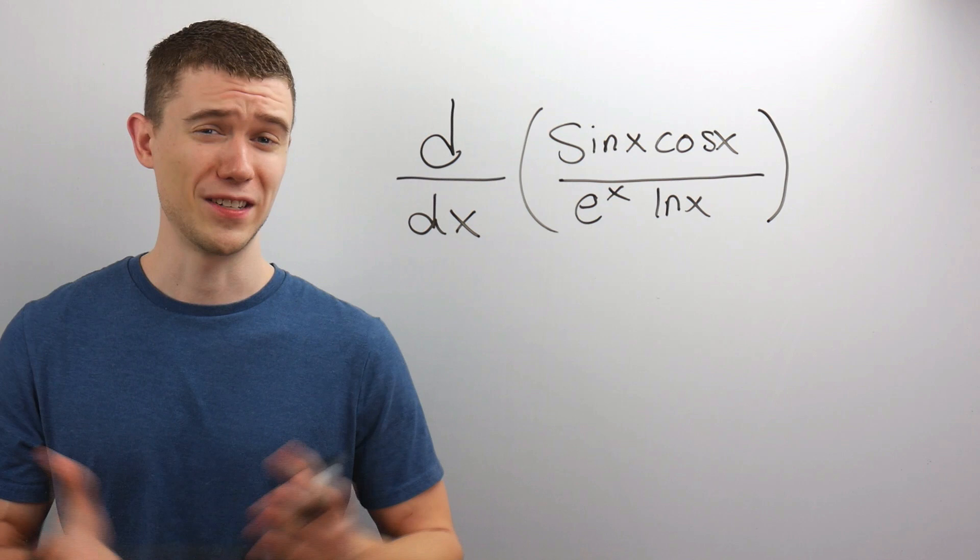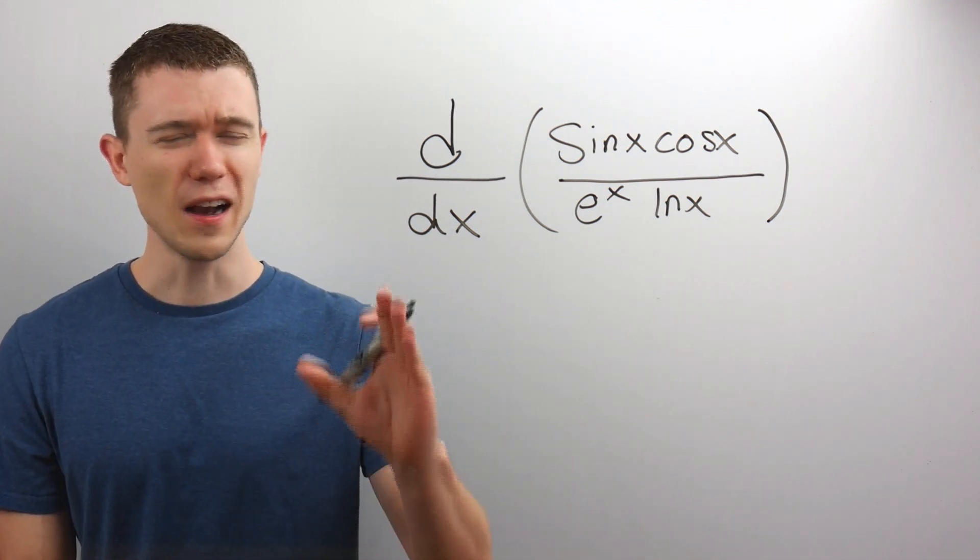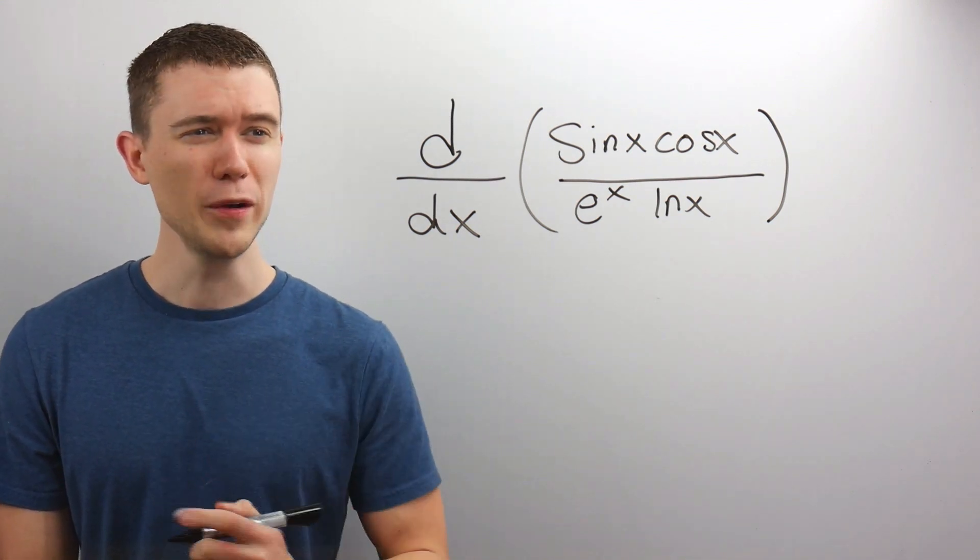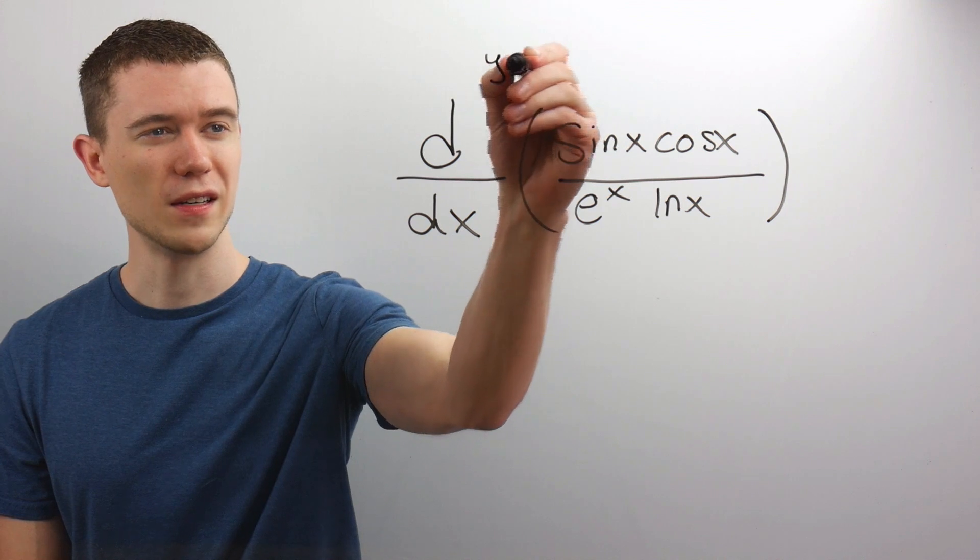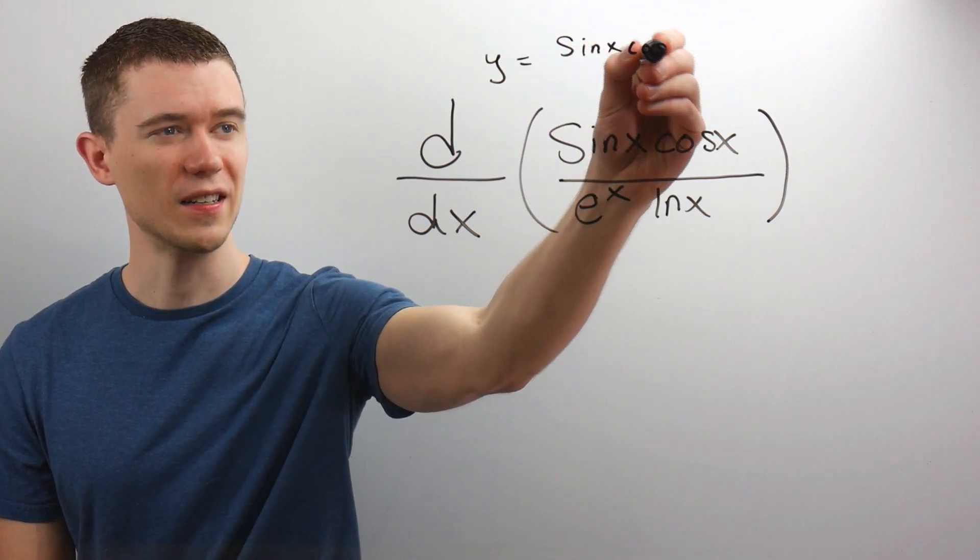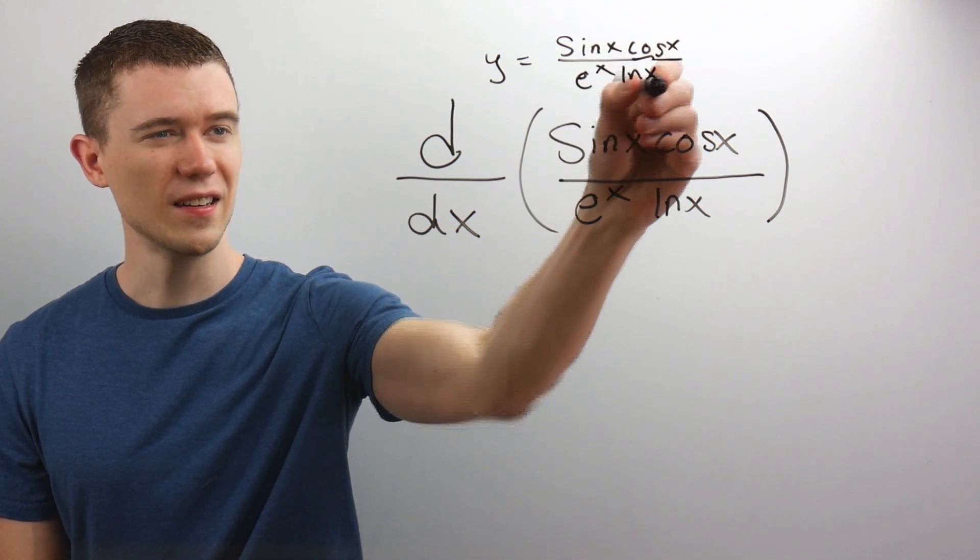Here we have a really nice derivative, well maybe I think it's nice. How would you go about doing this? I think I'm going to use a technique called logarithmic differentiation. The way we do that, I'm just going to call this y. So I'll just say y is this thing, sine x cosine x over e to the x ln x.